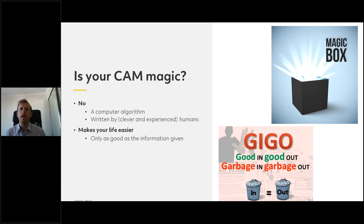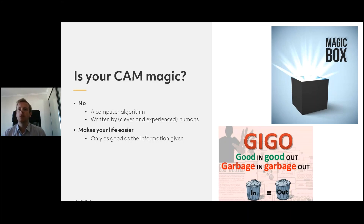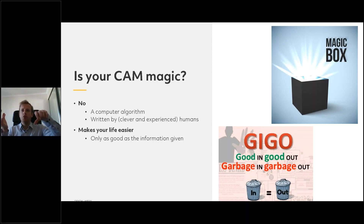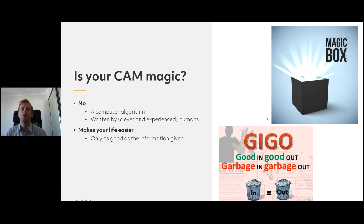So what is CAM software and what does it do? Well, it makes your life easier. You take a crown, say you want to mill it, and then the mill starts milling. It's only as good as the information you give it — if you put good information in you're going to get good information out, whereas if you put garbage in you're going to get garbage out. So we've got to realize it's not magic; it's only as good as the information we give it. Today we're going to talk a lot about the information we give the software to get the best result.